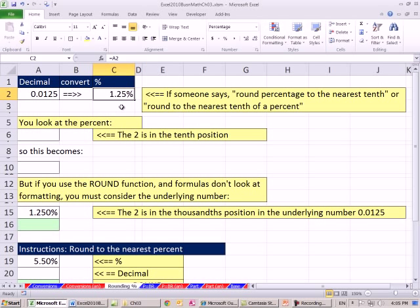If someone tells you to round and they use this kind of language, round percentage to the nearest tenth, you have to respect the fact that that formatting is applied and they're talking about the formatting. You also might see this, round to the nearest tenth of a percent. So I'm just going to write this down here, 0.0125.